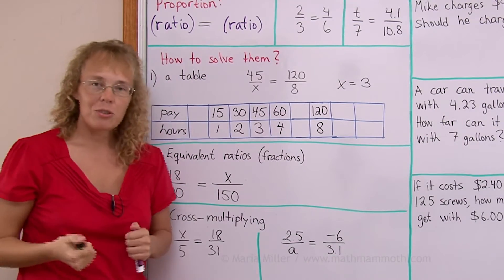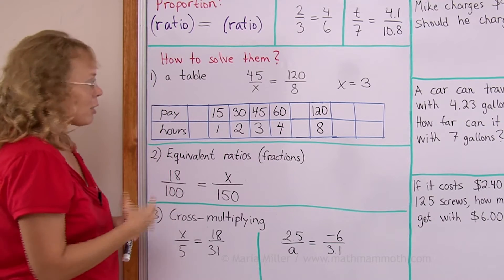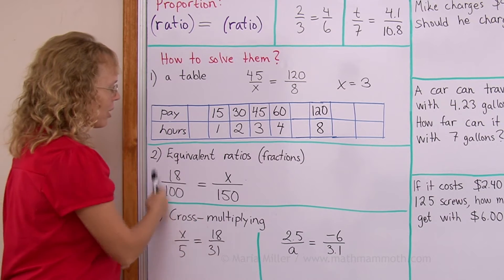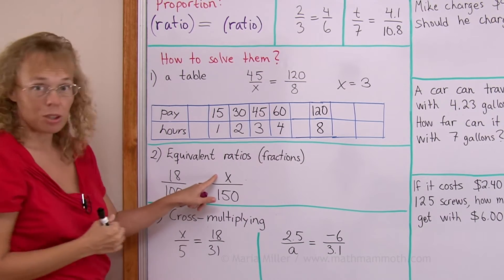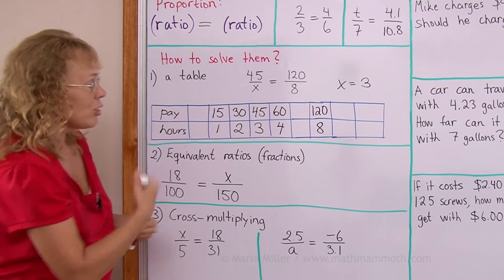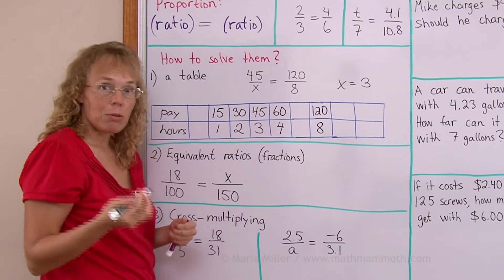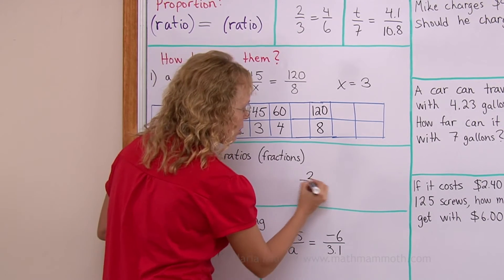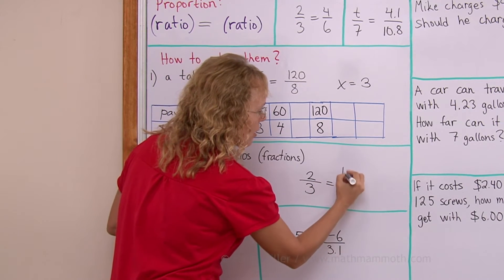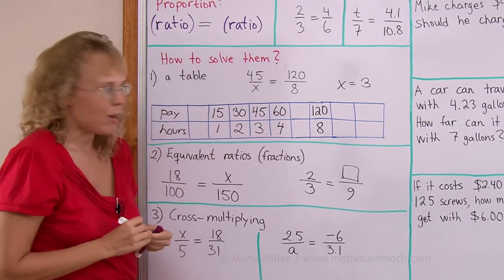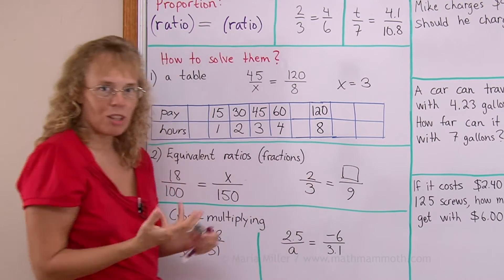Another way is to think through equivalent fractions. Equivalent ratios or equivalent fractions. And for example, let's say we have this kind of a proportion, we need to solve x. And you can use the same principle as you are already familiar with from equivalent fractions. If you have seen in your school books this kind of a problem, there's an empty spot here. And this was in your fraction math.